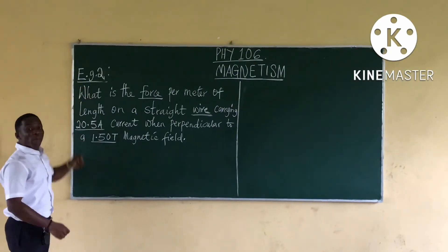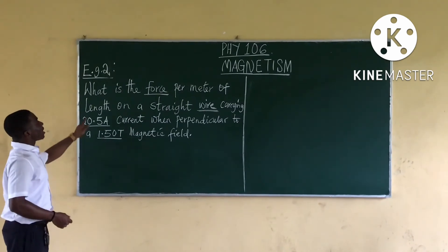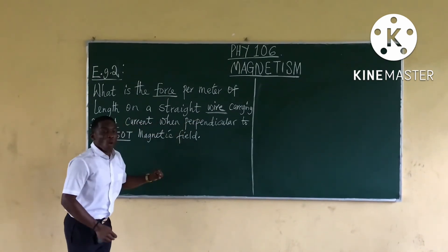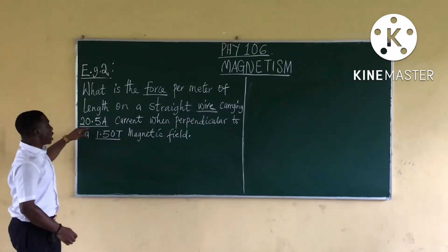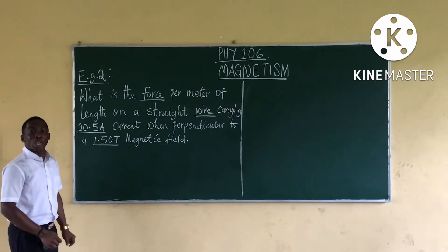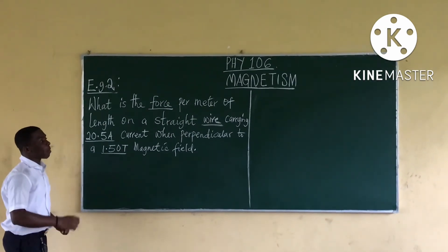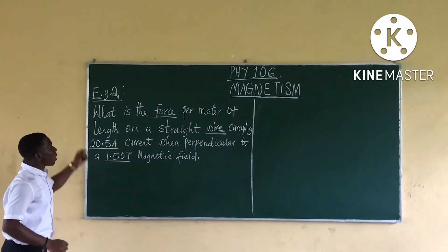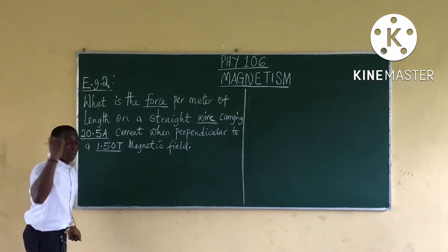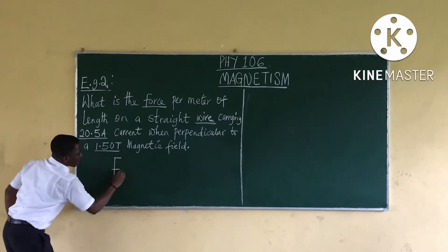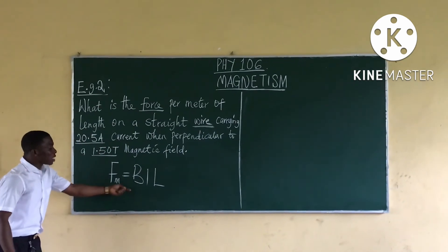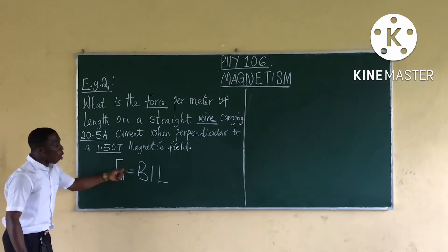Example two: What is the force per meter of length on a straight wire carrying a 20.5 ampere current when perpendicular to a 1.50 Tesla magnetic field? Since the question mentions a wire, the formula is F = BIL.